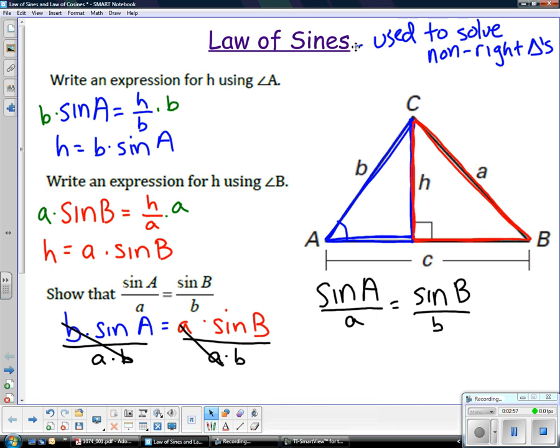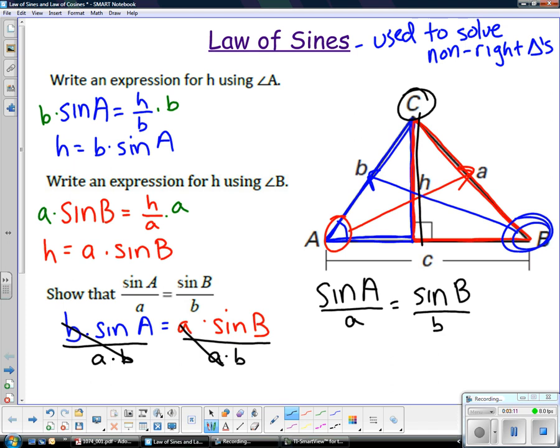Now let's talk about where angle A is. Angle A is here, side a is opposite of that. Angle B is here, side b is opposite. And angle C is opposite of side c.